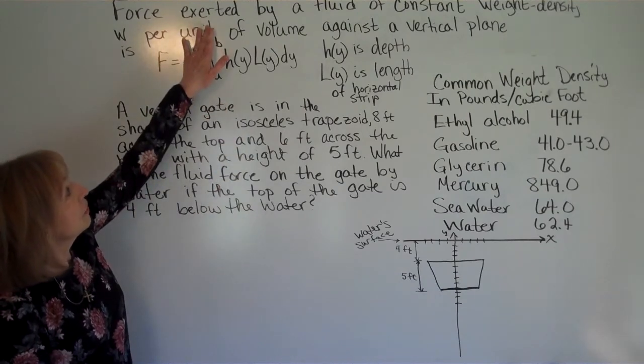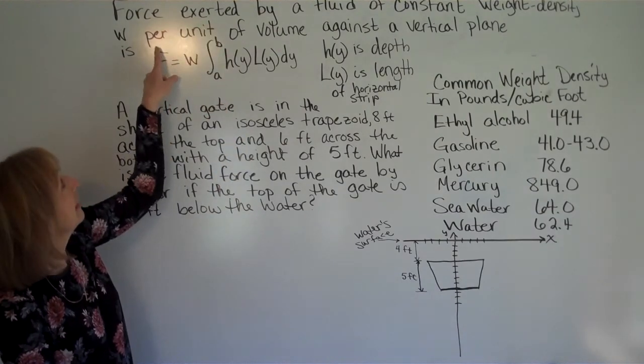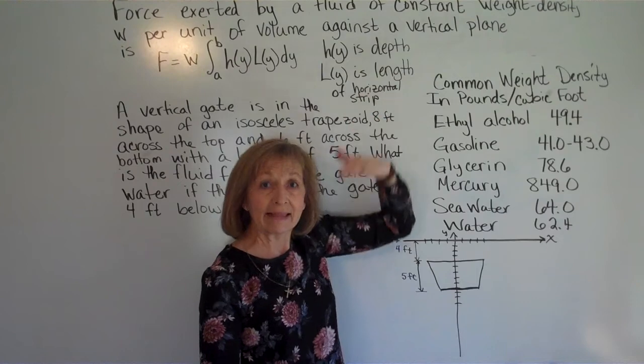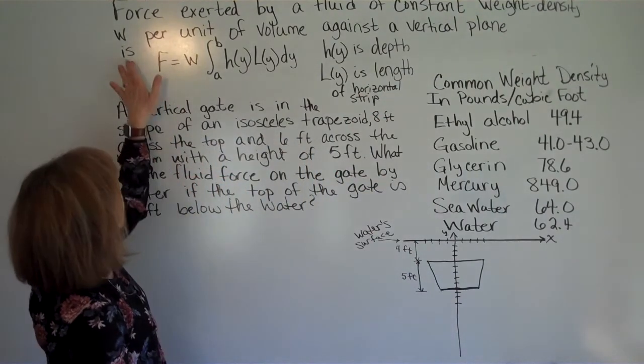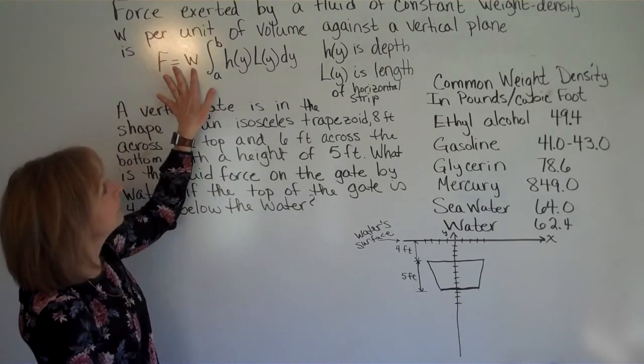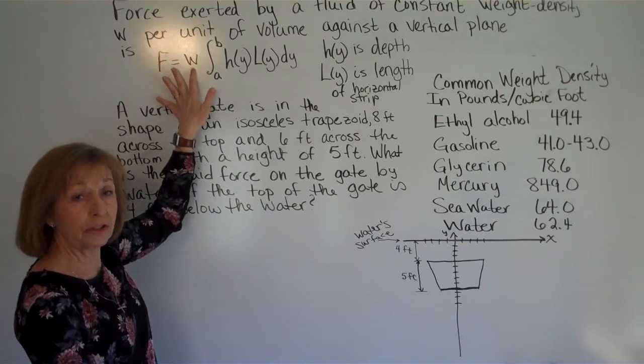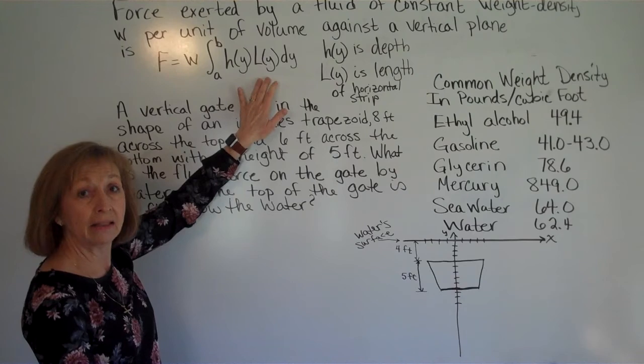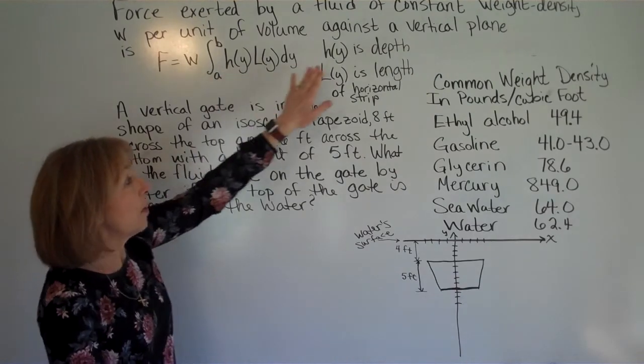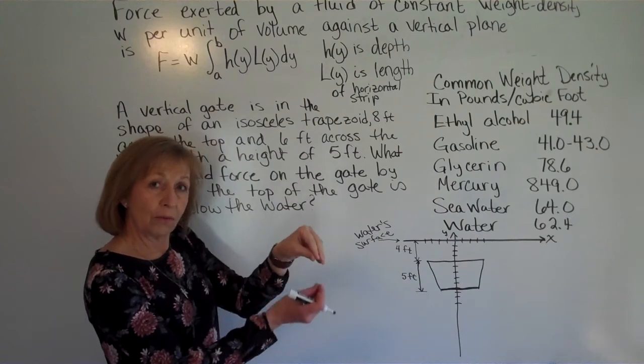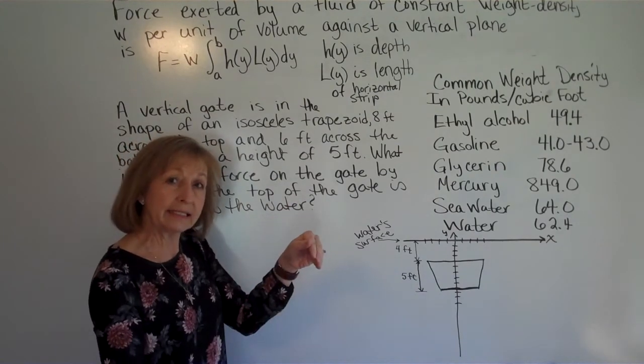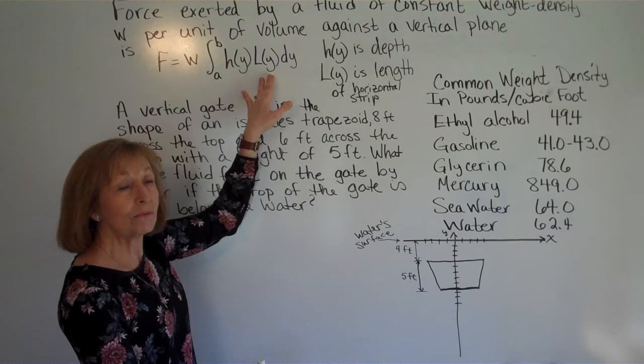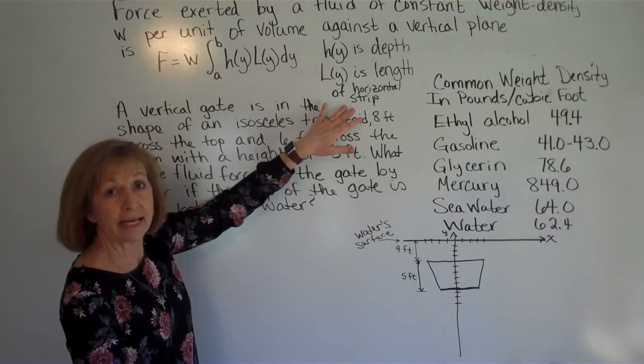So here we say force exerted on a fluid of constant weight density W per unit of volume against a vertical plate is the force equals your weight density of the liquid that it's submerged into times the definite integral from a to b of h of y times l of y dy. Now h of y is the depth, so since it's going through different varying depths, that's part of the process that is a variable component involved in it. And l of y is the length of a horizontal strip.